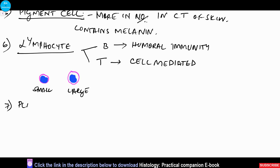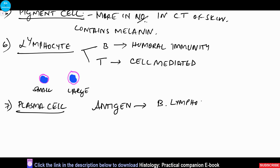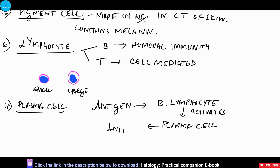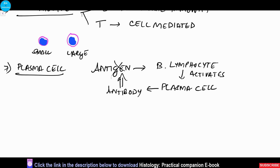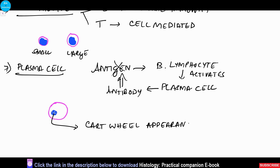Next we have the plasma cell. When the body is exposed to an antigen, the B lymphocyte gets activated and forms the plasma cell. This plasma cell secretes the antibody which destroys the antigen. The plasma cell is round to oval. Its characteristic feature is the cartwheel appearance of the nucleus due to the arrangement of nucleoli. We can also see Russell bodies, which store the antibodies.